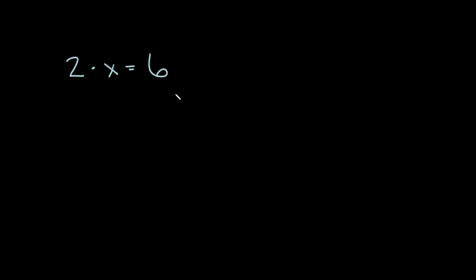So what do I mean by that? For example, if we have this problem right here: 2 times x is equal to 6. How would I solve for x? Well, I've got to get rid of this 2 somehow. In order to undo multiplication, all you're going to do is division. Divide by whatever you're trying to get rid of — so in this case we're going to divide by 2.